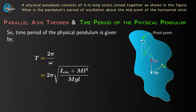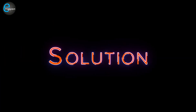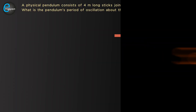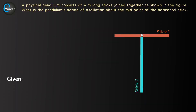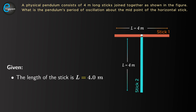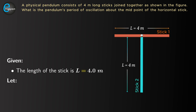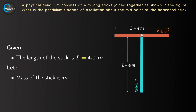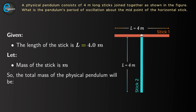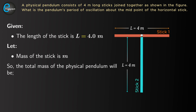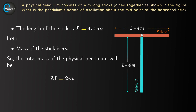Now let's see the solution of this question. Given the length of the stick is L equal to 4 meters. Let the mass of each stick be small m, so the total mass of the physical pendulum is capital M equal to 2m.